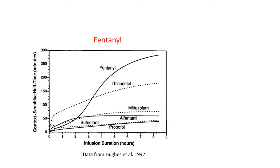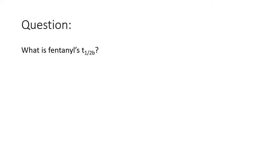This is a diagram depicting the context-sensitive halftime for commonly used drugs. It is very useful for understanding the concept; however, the terminal elimination half-lives vary to a confusing degree between sources. Fentanyl is a good example of this. In Peck and Hill, fentanyl's T-half-beta is said to be about 190 minutes. Here we can see it is maybe 300 minutes, and elsewhere I've seen it stated as high as 450 minutes. Just for argument's sake, we can calculate what we expect fentanyl's T-half-beta to be, based on other kinetic parameters that are more agreed upon.